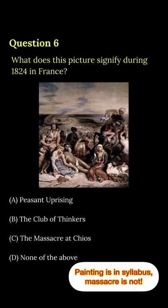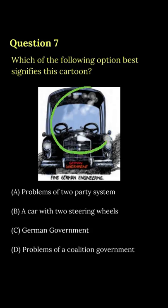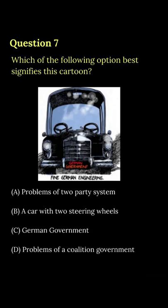This seventh photo is very interesting because you can see a car with two steering wheels. Here we see the problems of the coalition government. In a coalition government, there are many people's opinions, and the government's decisions become very difficult to make. So option number D is the answer.